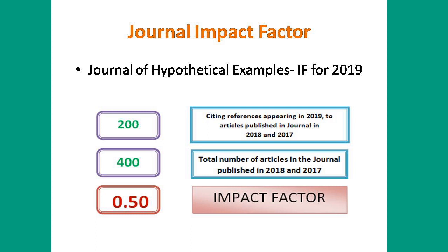For a hypothetical example: articles published in 2017 and 2018 were cited 200 times in the year 2019. The total number of articles for all issues combined for 2017 and 2018 is 400. So the impact factor is 200 divided by 400, which equals 0.50.